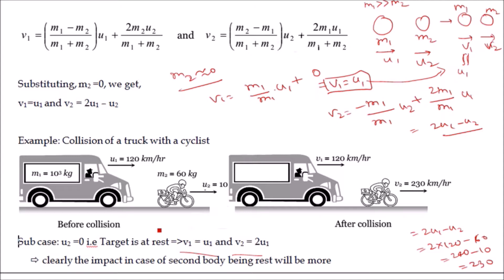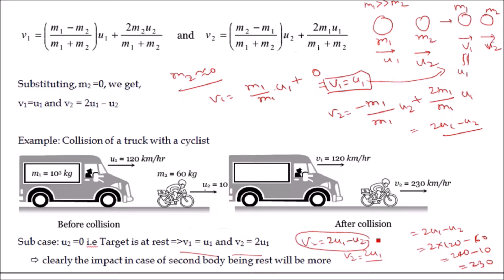Clearly the impact on the second body is greater when it is at rest. When the lighter target is moving with velocity u2, the velocity after collision is v2 = 2u1 − u2, whereas if it is at rest, the velocity after collision is v2 = 2u1. So the velocity after collision is greater when the target is at rest than when it is already moving.